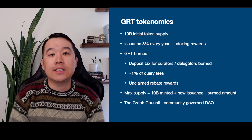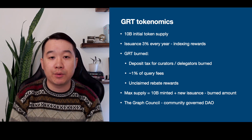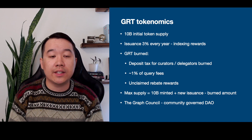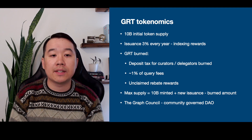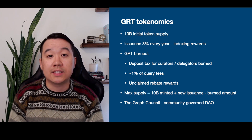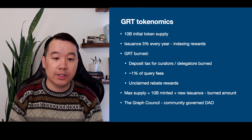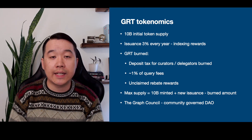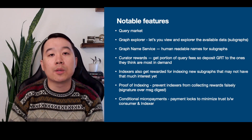What about GRT tokenomics? They had a 10 billion initial token supply and are issuing 3% every year for indexing rewards. They're also burning GRT — specifically the deposit tax for curators and delegators, around 1% of query fees, and unclaimed rebate rewards. The max supply will be the 10 billion minted plus new issuance minus the burned amount. They're also eventually setting up something called the Graph Council, moving toward a community-governed DAO-type approach.